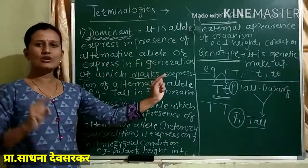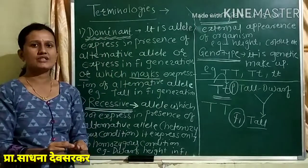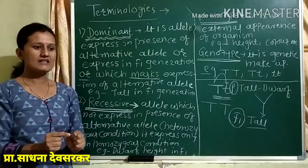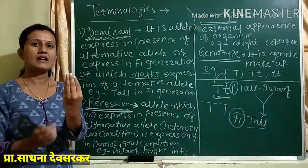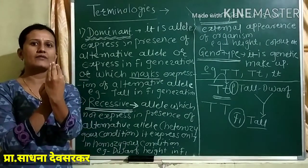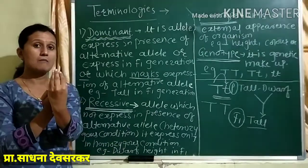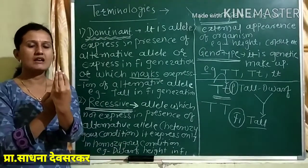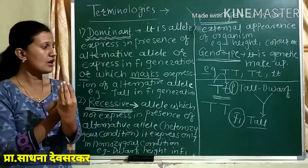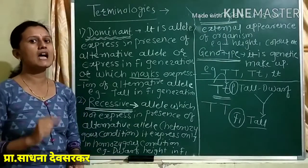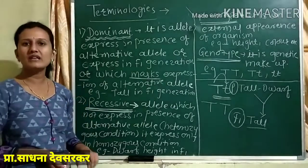Suppose there is a cross between pure tall and pure dwarf. Then the offspring of F1 generation are tall. That means the tall character hides the expression of the dwarf character. The tall character of the pea plant will mask the dwarf character — the dwarfness is not visible. It is there, but it is not seen. Tall is the dominant one.